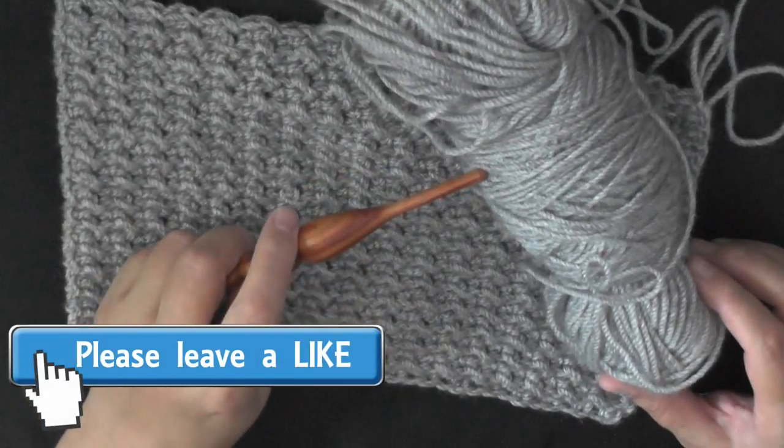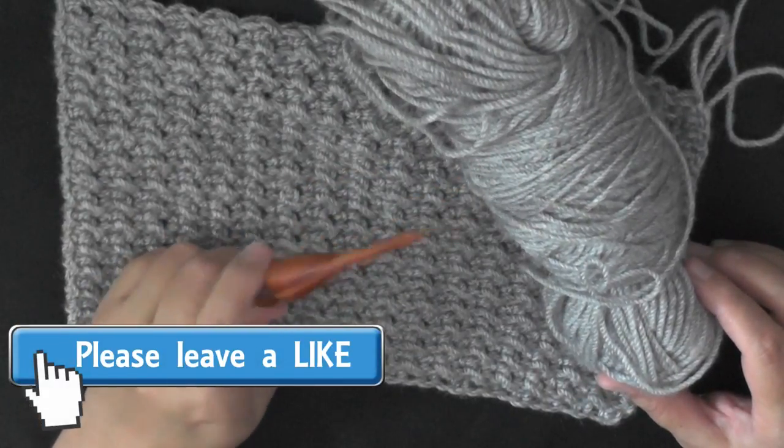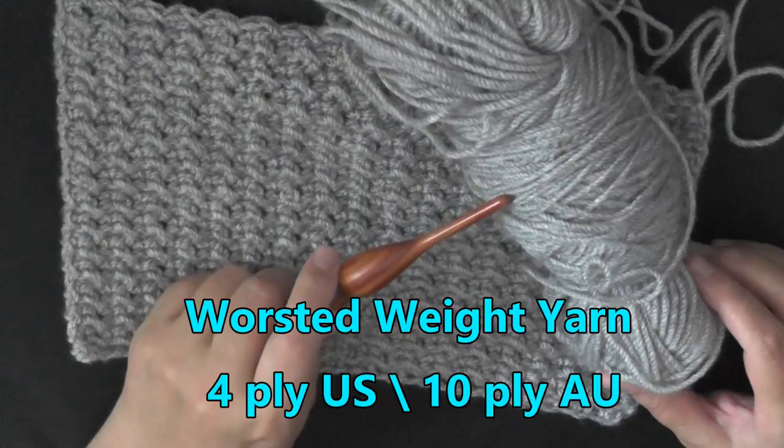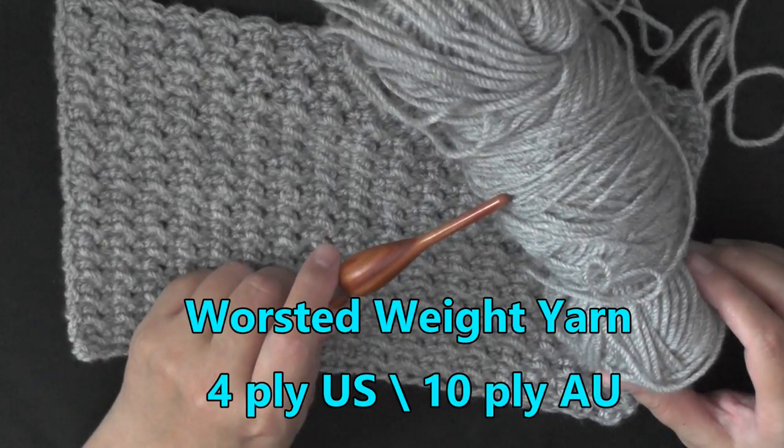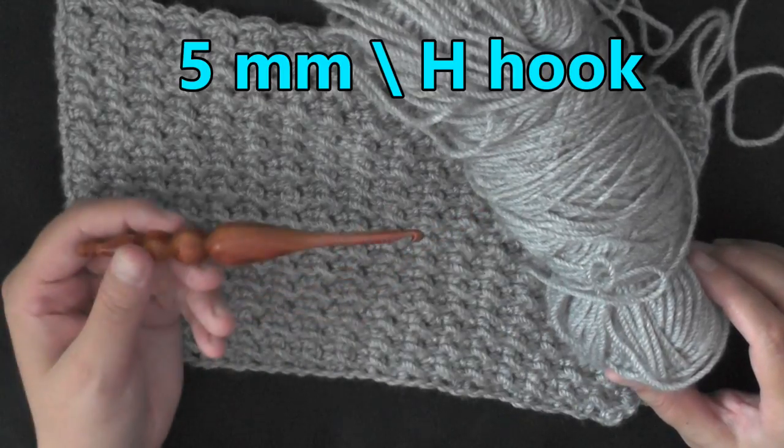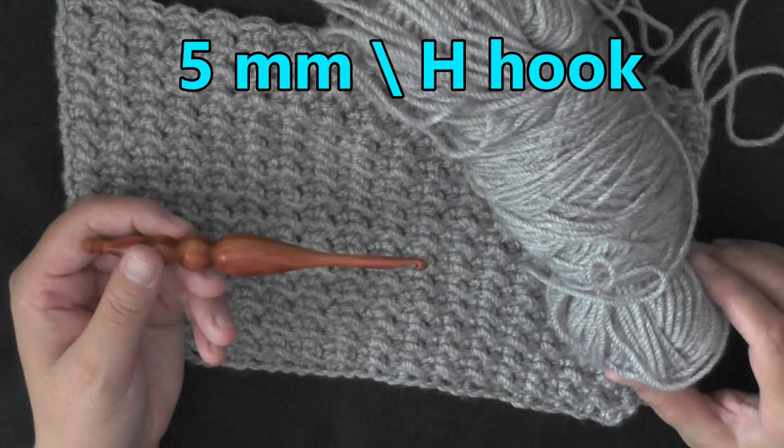To do this stitch you can use any size yarn and whatever hook size that yarn recommends. I'm using worsted weight yarn which is 4 ply for the US, 10 ply for Australia, and I'm using a 5mm hook or size 8 hook for the US.